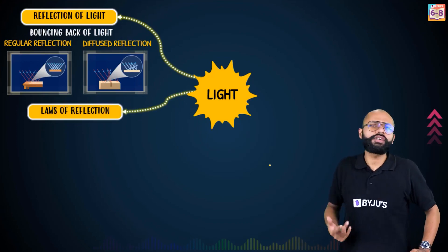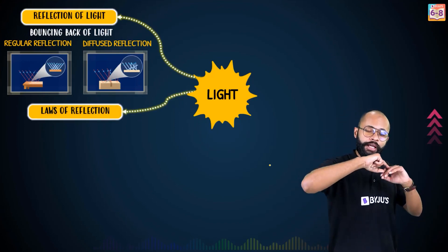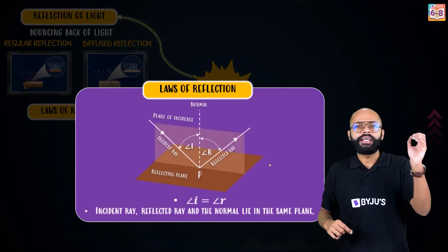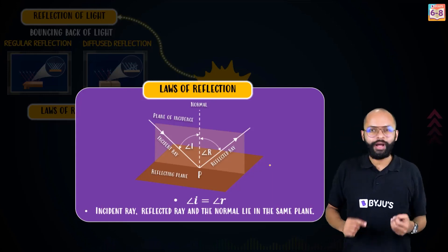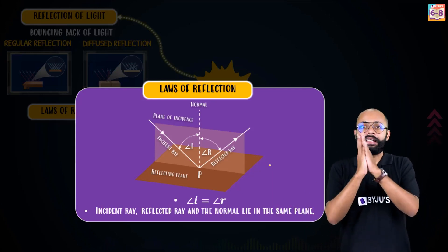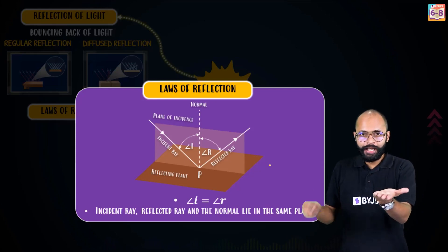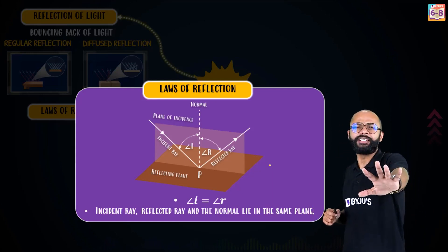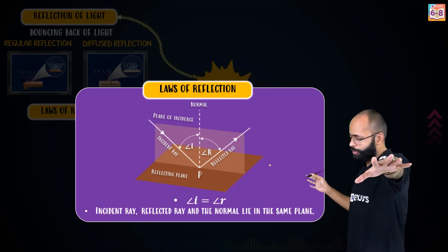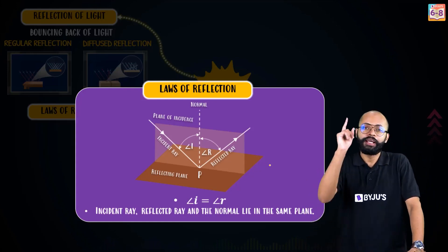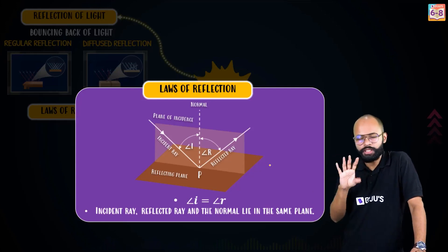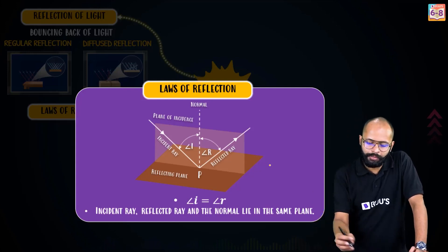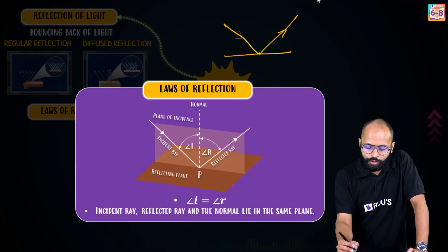Now the laws of reflection. These laws apply to any kind of reflection, wherever reflection happens. First law: angle of incidence is equal to angle of reflection. Second law: the incident ray, reflected ray, and the normal all lie in the same plane. These are the two statements of the laws of reflection. This is an important exam question — exams love this. Draw a diagram for it if you can; even a simple diagram works fine.